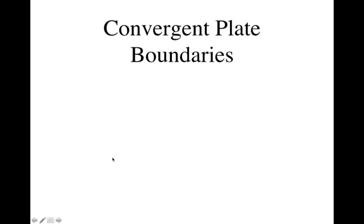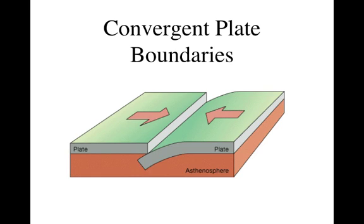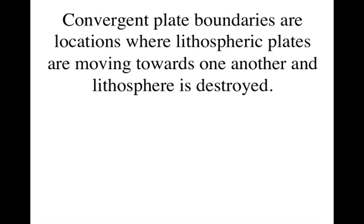So our last type of plate boundary is called a convergent plate boundary. Convergent — that's from converge, which means to come together. Convergent plate boundaries are locations where lithospheric plates are moving towards one another, and when that happens, lithosphere is being destroyed. Remember the Earth doesn't get bigger or smaller, so if at the divergent boundaries we are making new land and new lithosphere, we have to have somewhere else where the land is being destroyed — and it is at the convergent plate boundaries.